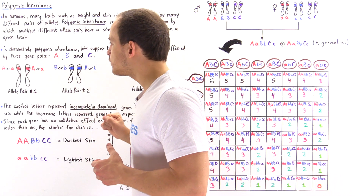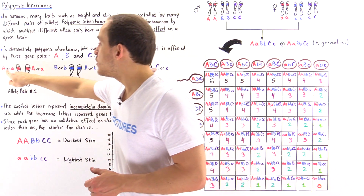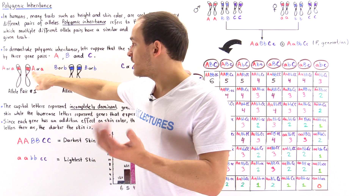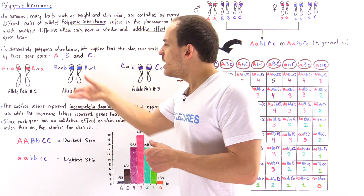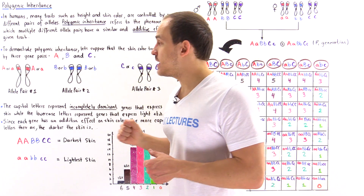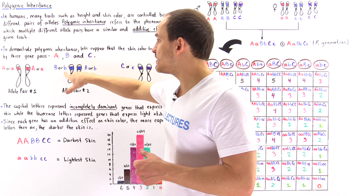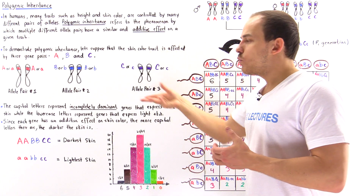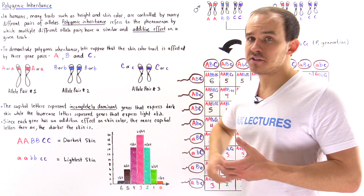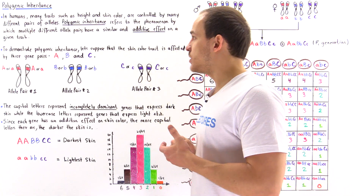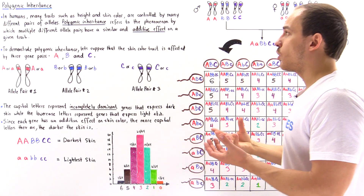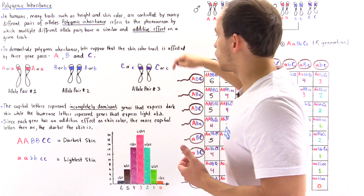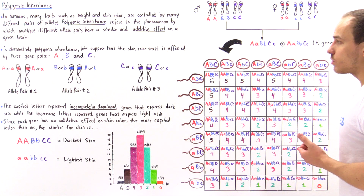In pair number one, we have the A gene, which can be either uppercase A or lowercase A on each chromosome. The second allele pair contains the B gene — we can have either uppercase B or lowercase B on each chromosome. Finally, allele pair number three, on homologous pair number three, contains gene C, which also controls and has an additive effect on skin color. We can also have uppercase C or lowercase C.